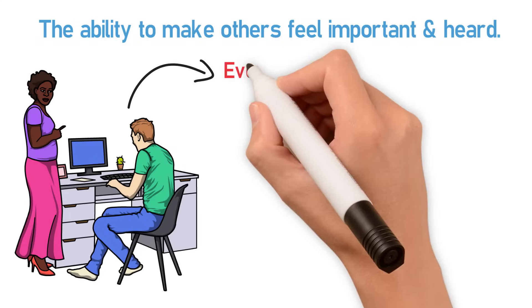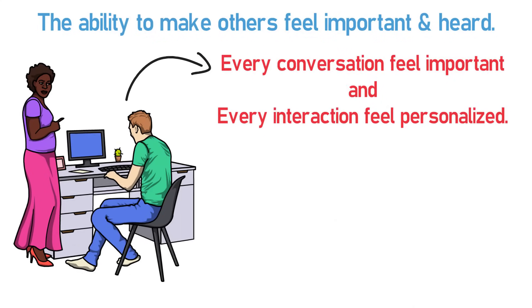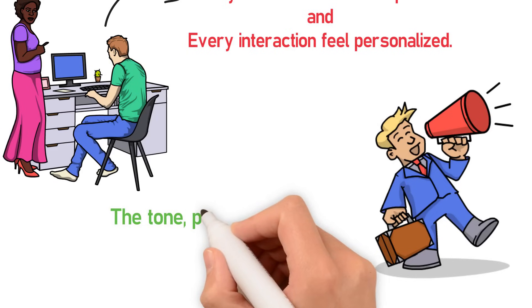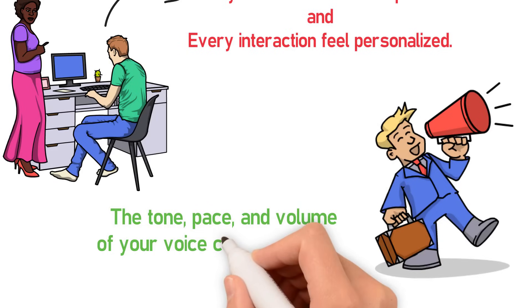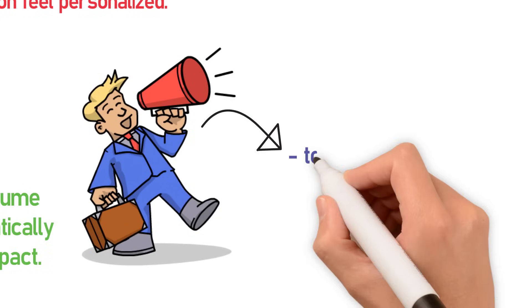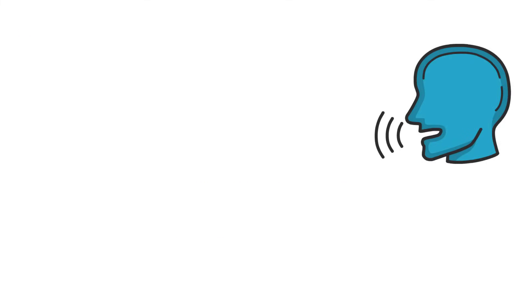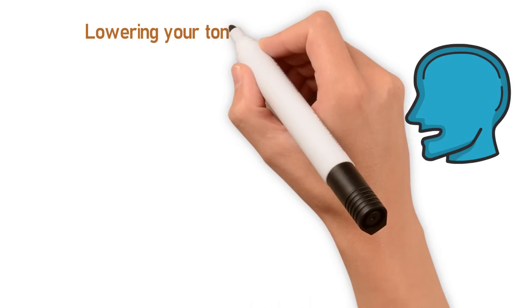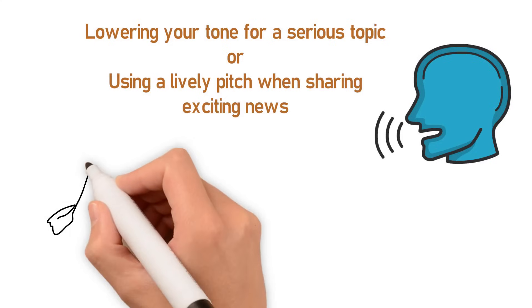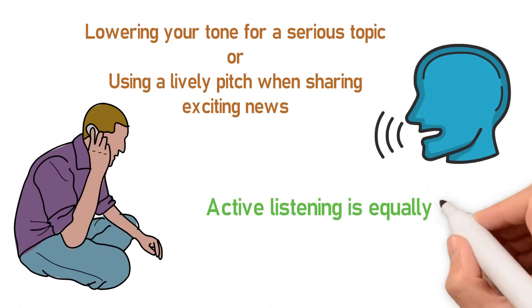Charismatic individuals often have the knack for making every conversation feel important and every interaction feel personalized. Voice modulation is a powerful tool in effective communication. The tone, pace, and volume of your voice can dramatically alter the message's impact. Lowndes emphasizes the importance of using your voice to convey enthusiasm, sincerity, and confidence. Modulating your voice to suit the context, whether it's lowering your tone for a serious topic, or using a lively pitch when sharing exciting news, can significantly enhance the effectiveness of your communication.